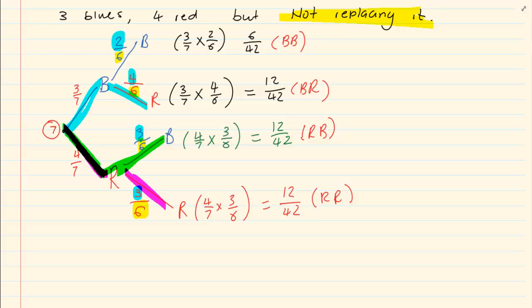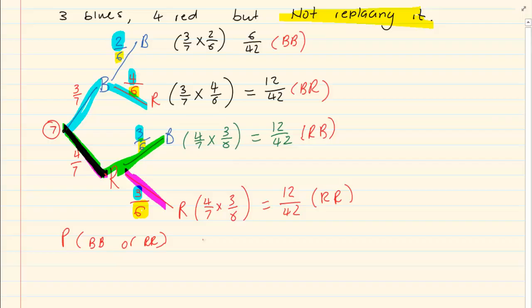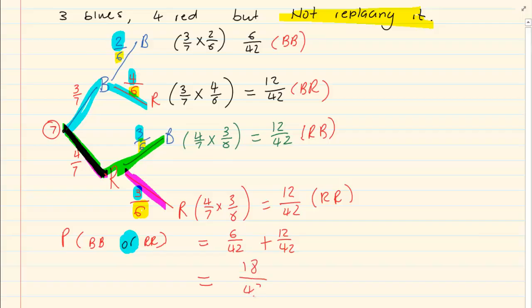Now let's say I ask: what is the probability of BB or BR? As soon as I say OR, remember from grade 10 — take everything. BB is six over 42, plus BR is twelve over 42. So the probability of BB or BR is eighteen over 42. Thank you for watching.